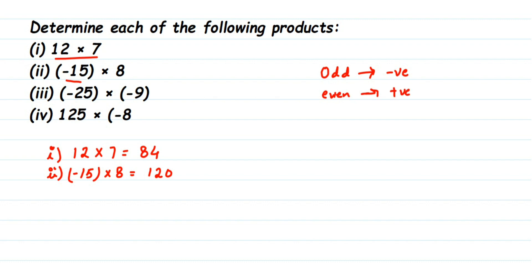So after multiplying, you don't have to put any sign. It is a positive number. Now here in this question, I have only one negative sign and one is an odd number. If it is odd, it means I am going to have a negative sign. So it will be minus 120.